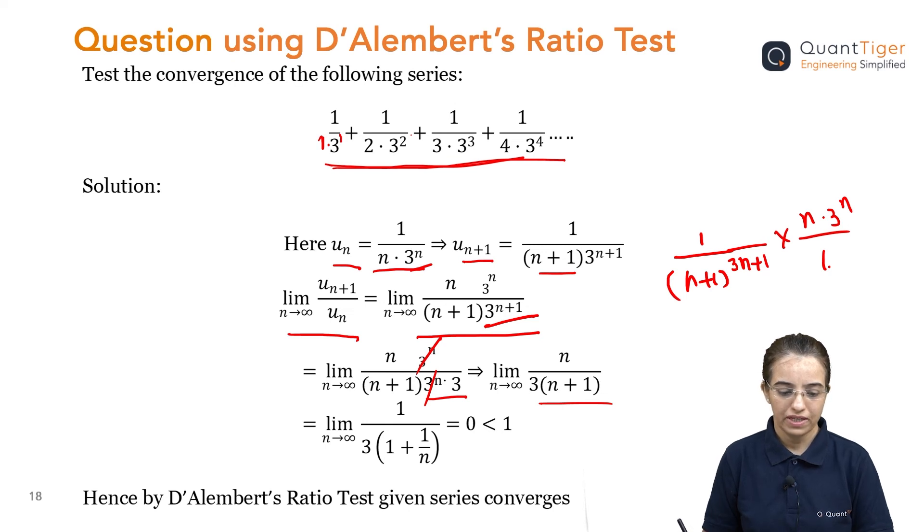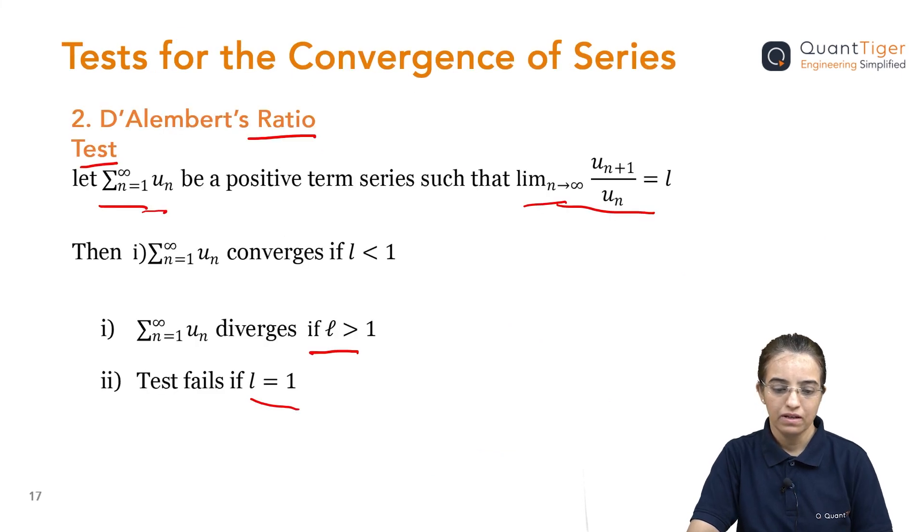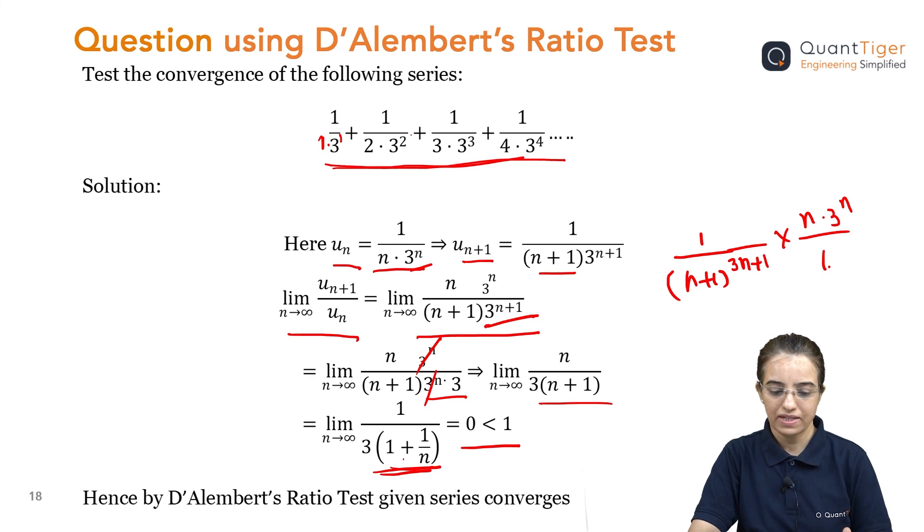Now I can just check whether it is convergent or not convergent. If I will keep here infinity, if I will check, infinity is the limit. If I put infinity in place of n, I am getting the answer 0 which is less than 1. As we saw in the test which I explained earlier, we saw that if the answer is less than 1, then this series is convergent. So, that is why we can say that this given series is a convergent series. So, this is how we applied the ratio test.